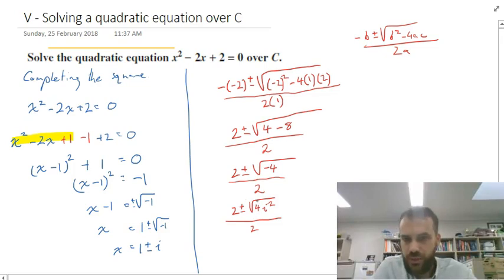The 4 can come out of our square root now as the square root of 4, which is 2. So 2 plus or minus 2 times i all over 2.